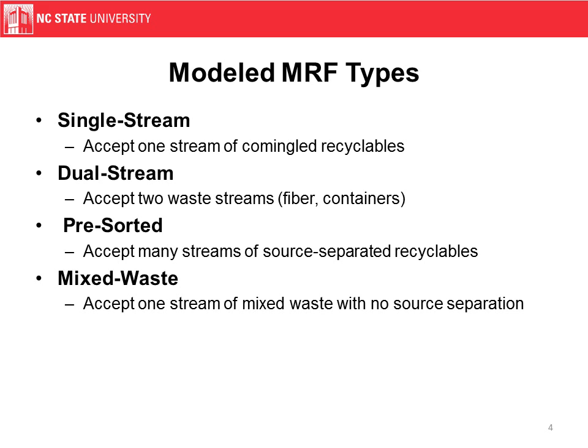A pre-sorted MRF is one where you would put one bin out on the curb, and when someone drove by they would pick up the recycle bin and sort it on site. The pre-sorted MRF accepts an aluminum stream, a ferrous stream, etc. — all already separated by the time they arrive. Another source for pre-sorted material would be drop-off locations. A mixed waste MRF means there is no source separation — just a single stream of waste placed at the curb, from which material is recovered.